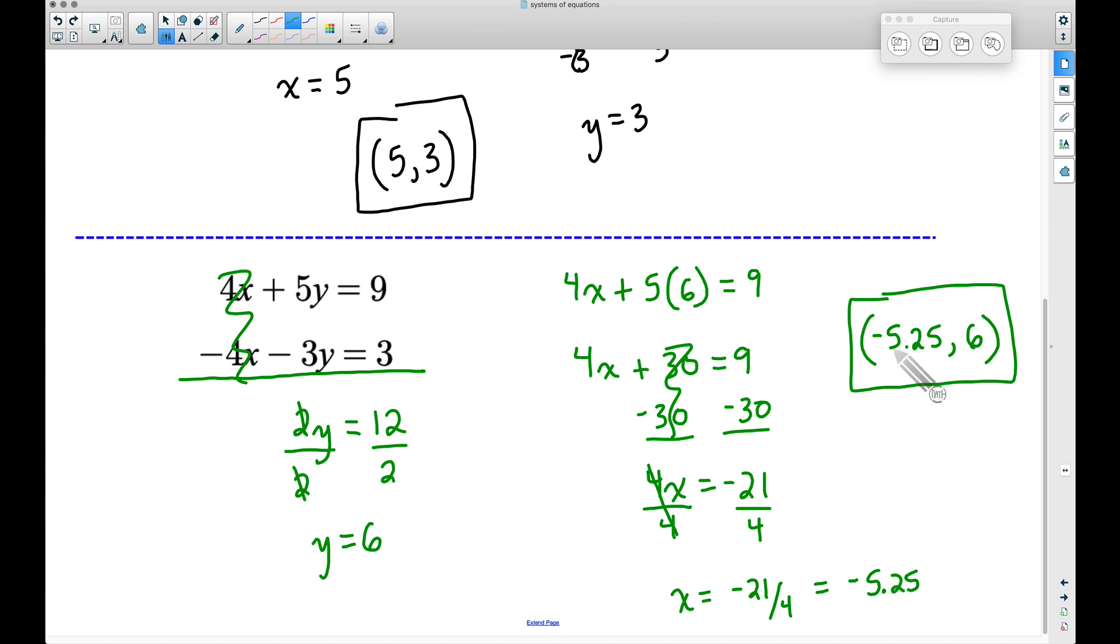Now let's come back and make sure it works for both equations. Taking negative 5.25 and plugging that into x, 4 times negative 5.25—I'm thinking of that as taking 4 times 5.25, and that's going to be 21.